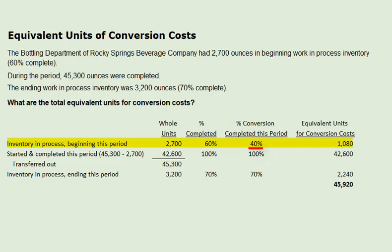Unlike the problem to solve for equivalent units of material costs, where direct materials are added at the beginning of the process, the percentage of materials added in the period is 0%. It is 0% because materials were added at the beginning of the process, and that beginning of the process was in the prior period. Therefore, it's 0%.